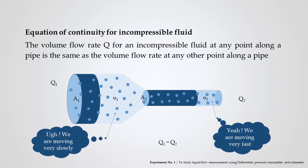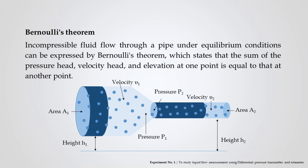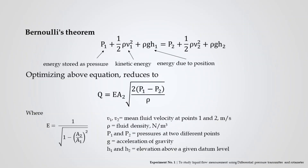The equation of continuity for incompressible fluid states that the volume flow rate Q at any point along a pipe is the same as the volume flow rate at any other point, that is Q1 equals Q2. The equation for volume flow rate is found using Bernoulli's theorem, which states that the sum of the pressure head, velocity head, and elevation at one point equals that at another. The following equation represents conservation of energy with no energy loss between two points. The first term represents energy stored as pressure, the second represents kinetic energy, and the third represents energy due to position.